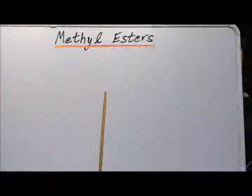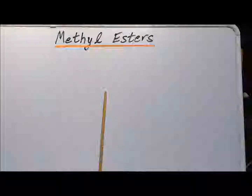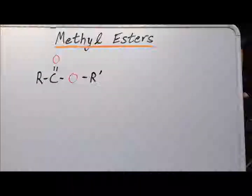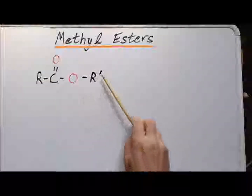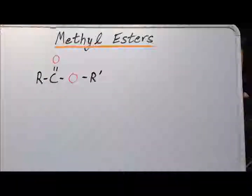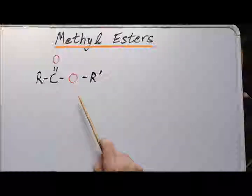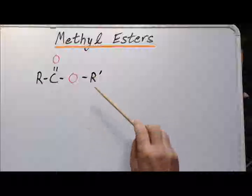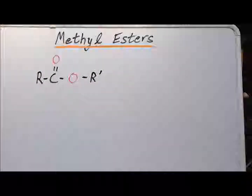Hello. In this video, we are going to discuss the synthesis of methyl esters. A carboxylic acid ester is a carboxylic acid derivative where it has this particular structure where, conceptually, we replace the acidic hydrogen on the carboxylate group by an alkyl group R prime.